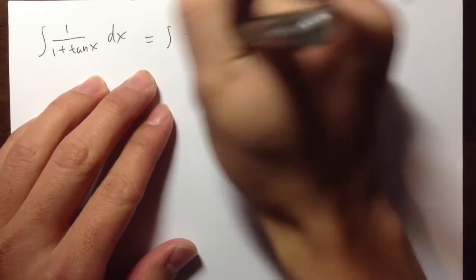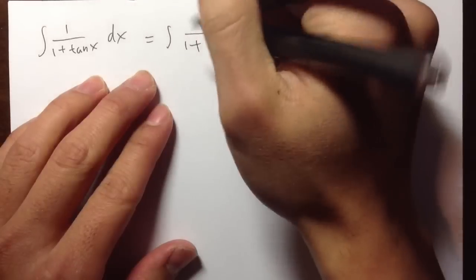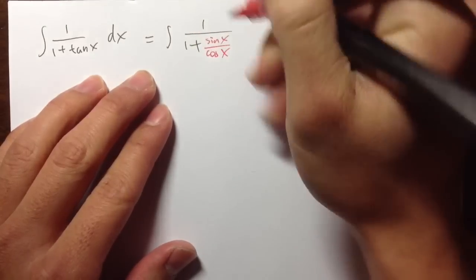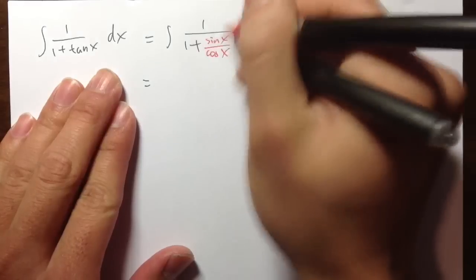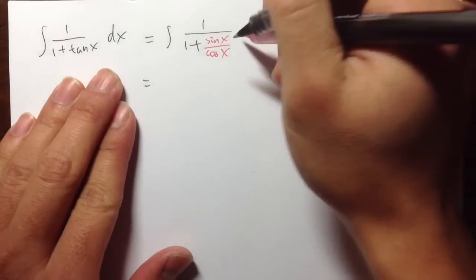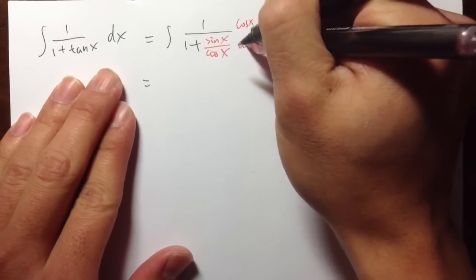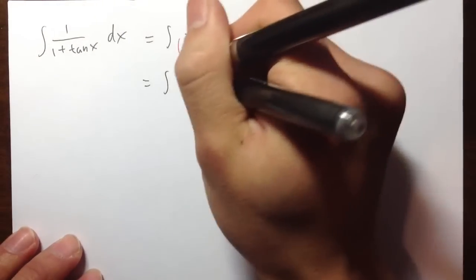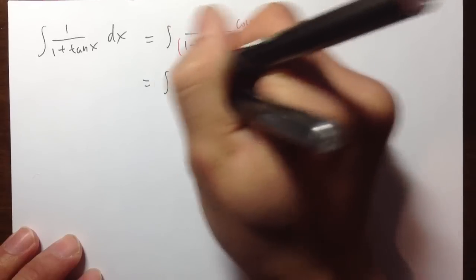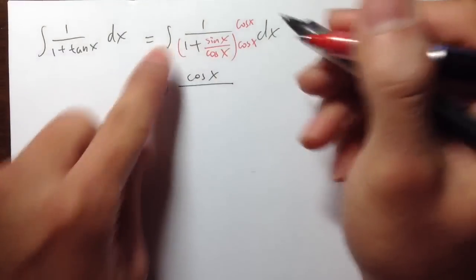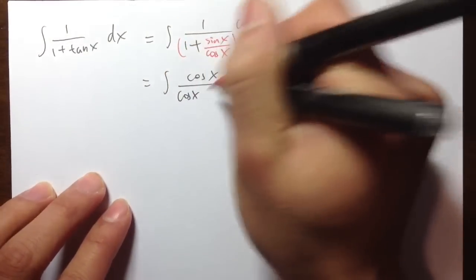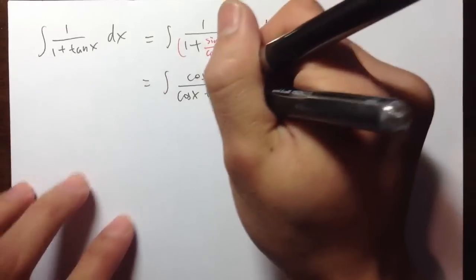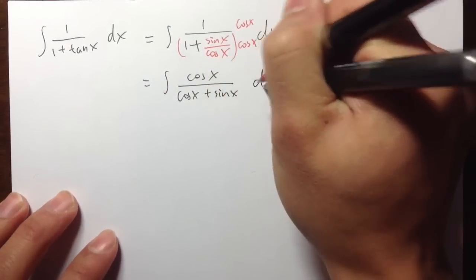So this is equal to 1 over 1 plus sine x over cosine x dx. And then we have a complex fraction, so we can just multiply the top and bottom by cosine x — the denominator right here. And we will get the integral of cosine x on the top over cosine x times 1, which is cosine x, plus cosine x times sine x over cosine x, which they cancel, and I have cosine x over cosine x plus sine x dx.